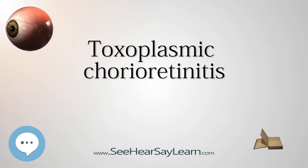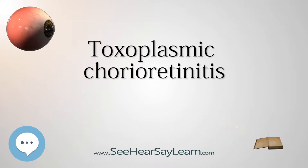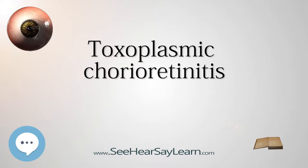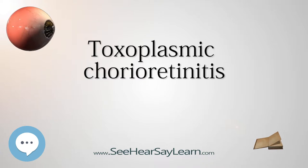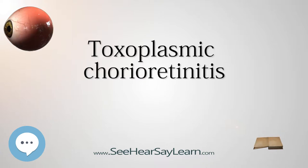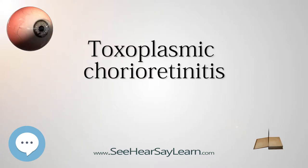The most common symptom is decreased visual acuity in one eye. The diagnosis is made by examination of the eye using ophthalmoscopy. Sometimes serologic testing is used to rule out the disease, but due to high rates of false positives, serologies are not diagnostic of toxoplasmic retinitis.